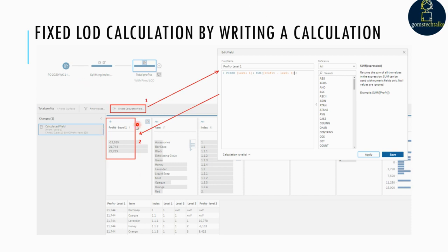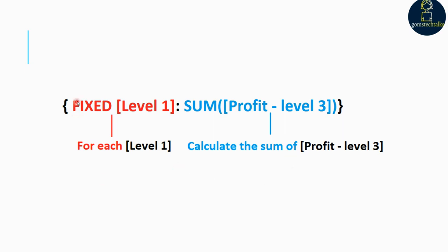Here you can see that we have added an LOD, which is a calculated field. To do this, first click 'Create Calculated Field' and then write the expression in the editor. You start with 'FIXED' because it's a fixed LOD, then define the level, and after the colon you specify the aggregation. So FIXED [Level]: SUM(Profit) means for each level you are summing the profit.